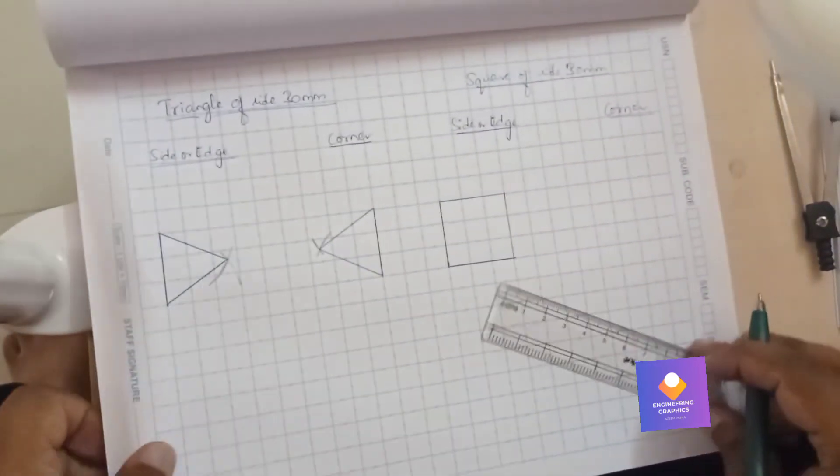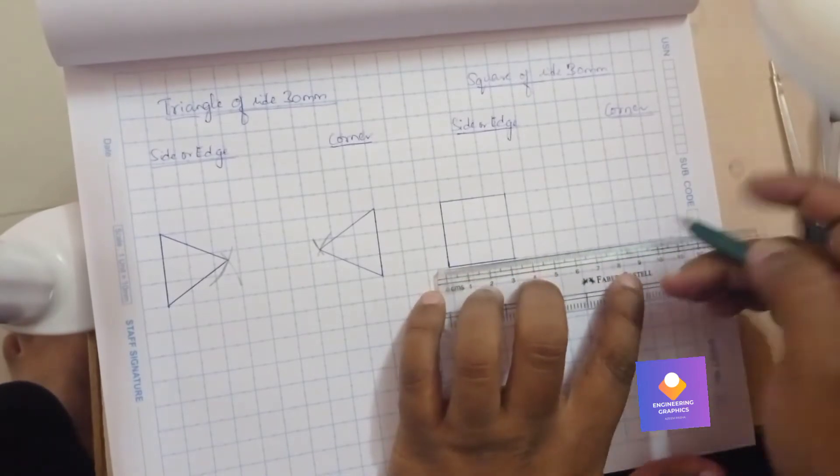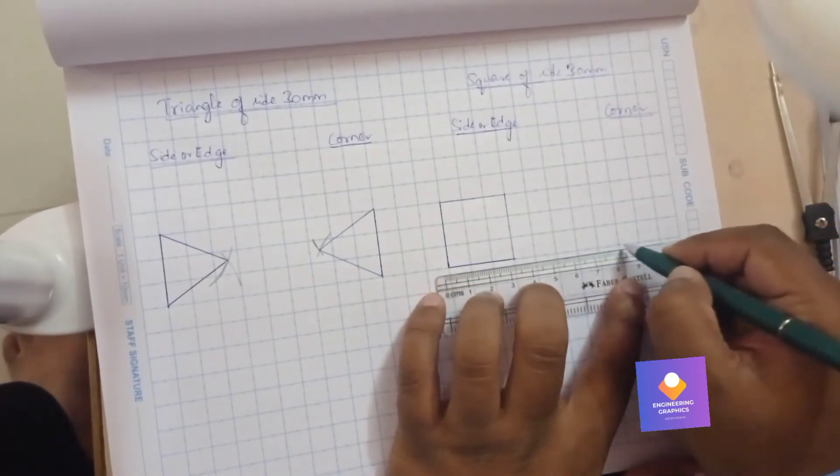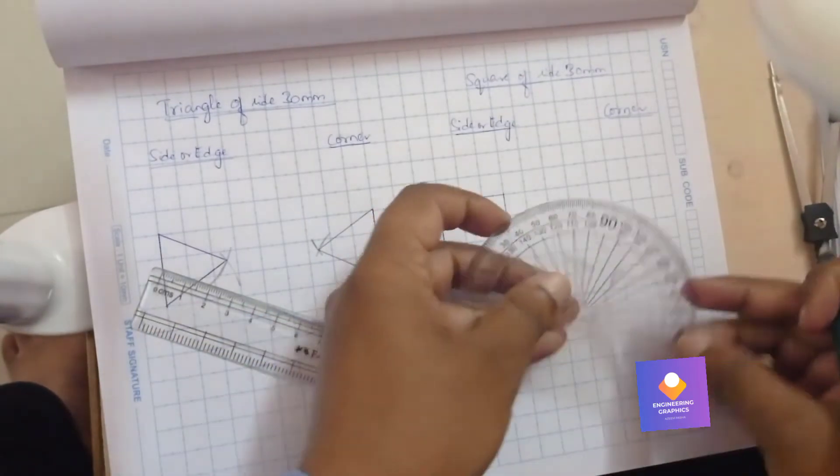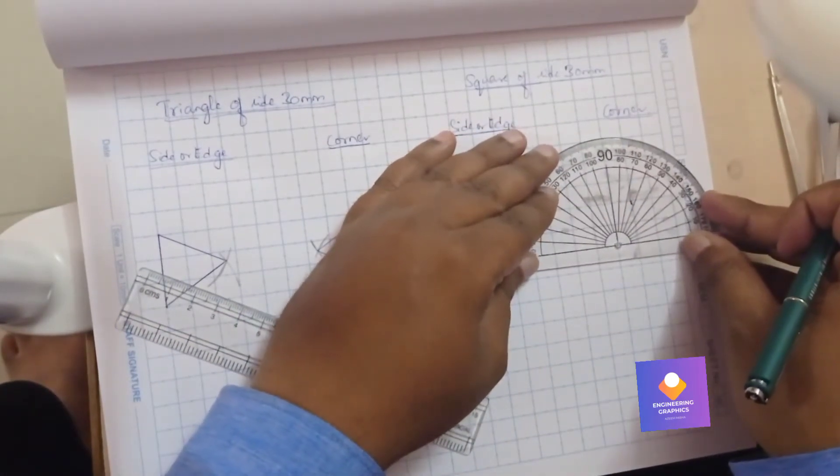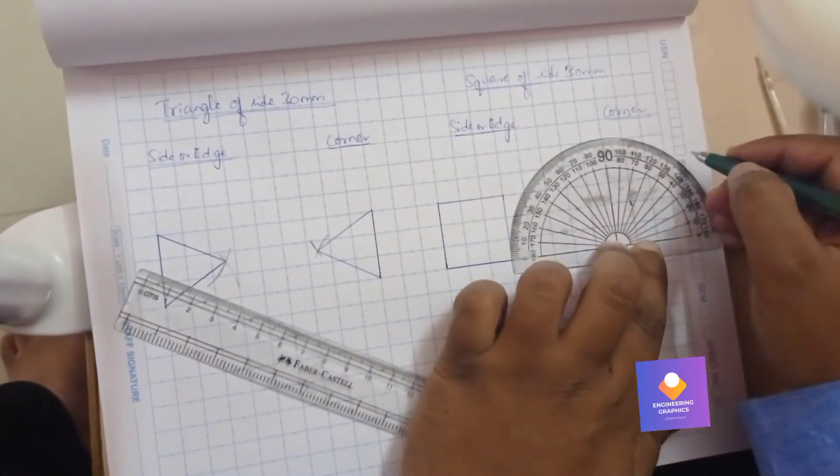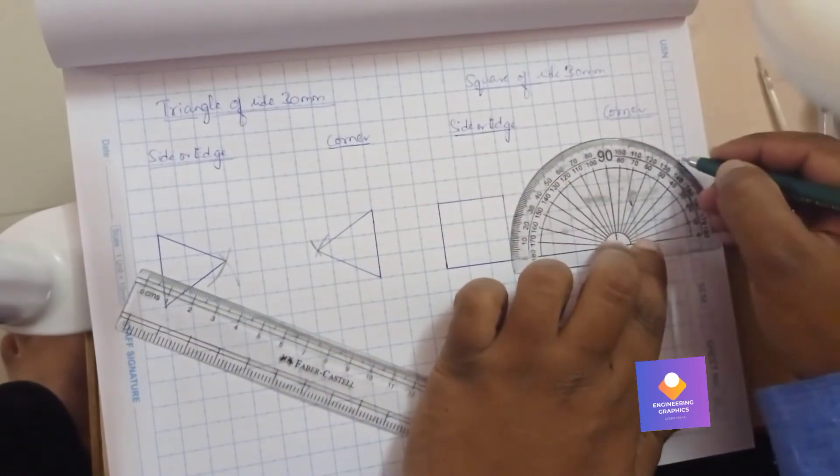Now we will be constructing the square with respect to corner position. First you take any reference point, okay? To that reference point you keep the protractor exactly to that reference point and mark 45 degree on both the sides of the protractor.